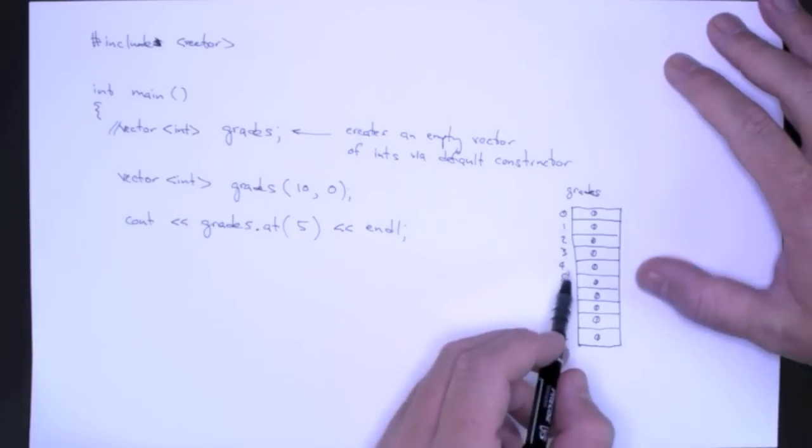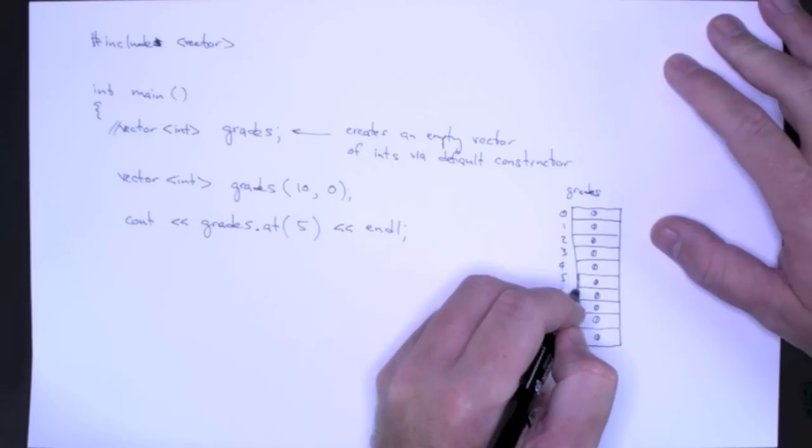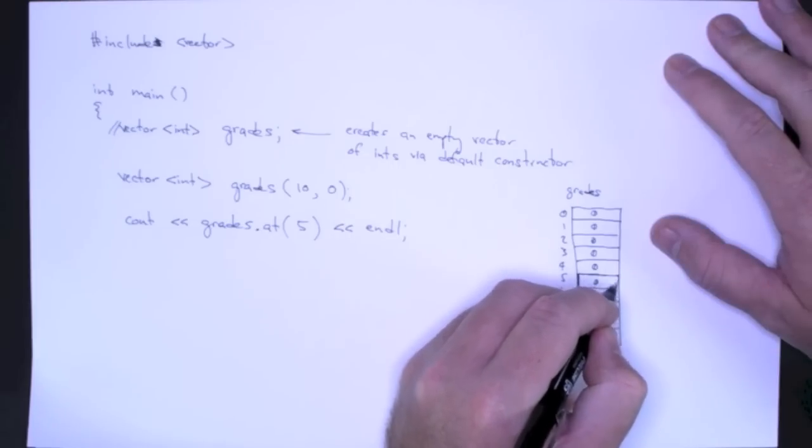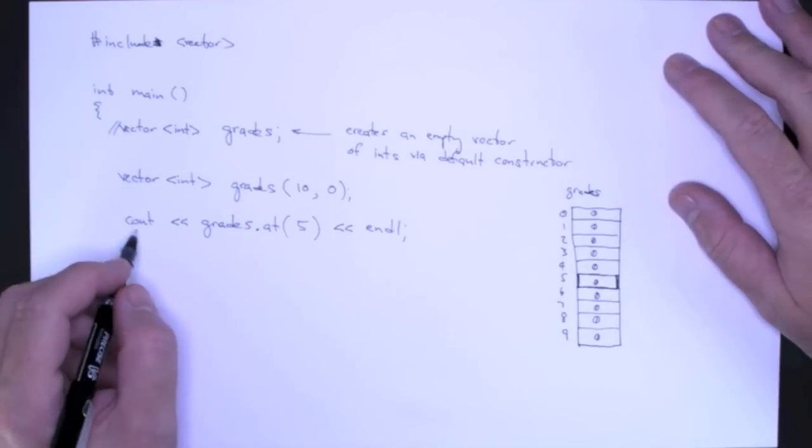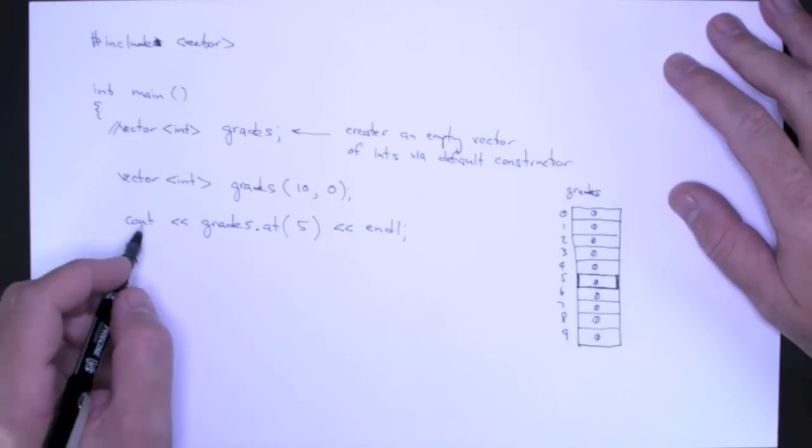And when we run this program, it will print out this value, which of course is 0. And this is just a call to the at method.